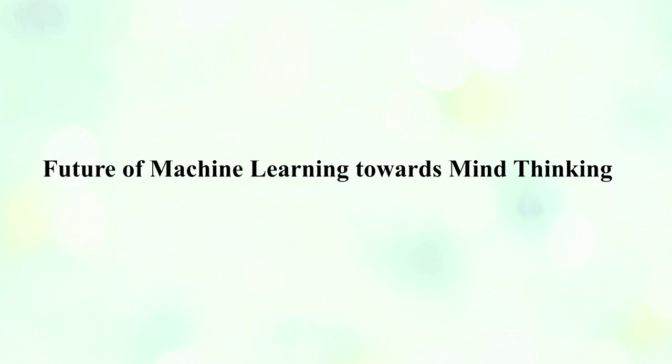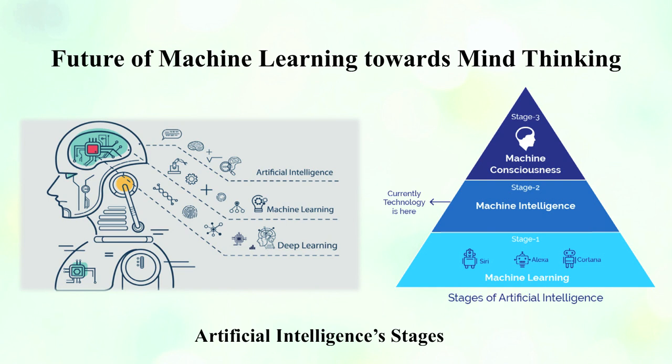The future of machine learning moves toward mind-thinking, intellectual powers marked by complex feats, high levels of motivation, and self-awareness. The cognitive ability of human intelligence consists of: learning, re-learning, forming concepts, understanding, applying logic, recognizing patterns, planning, formulating, solving problems, making decisions, retaining information, and using language to communicate. The same is being applied in artificial intelligence and machine learning.